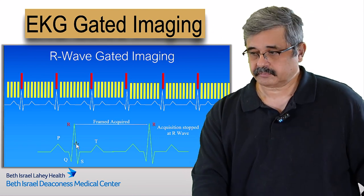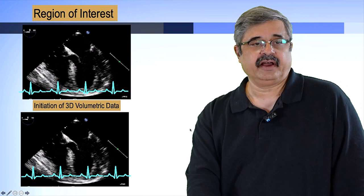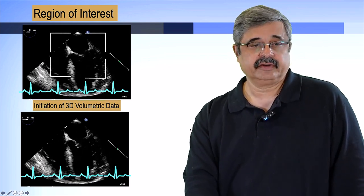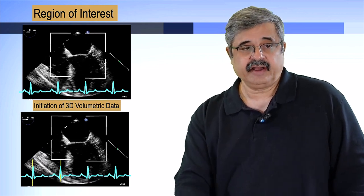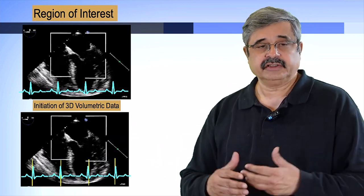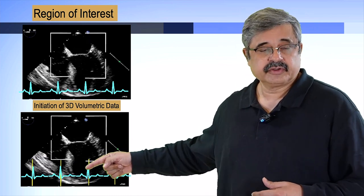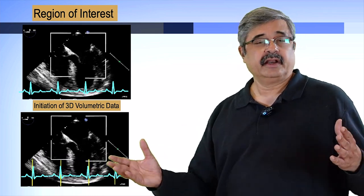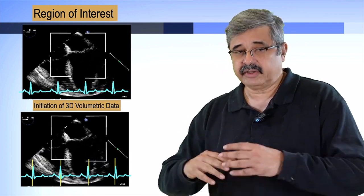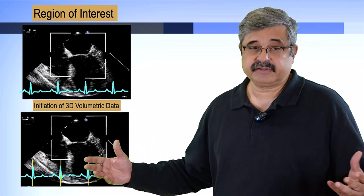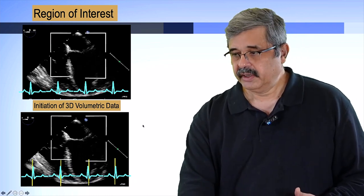The region of interest — the mitral valve — is identified first. Then three-dimensional volumetric data acquisition begins, which includes identifying R waves on the EKG signal being fed to the machine. It was not just important to display the EKG; the computer had to be told to recognize the R waves. You knew it was working when you saw yellow spikes on the R waves, indicating the computer was recognizing them. A lot of things could break down at any moment, and if you didn't know to activate R-wave recognition, the entire operation could fail from simply not pressing one button.